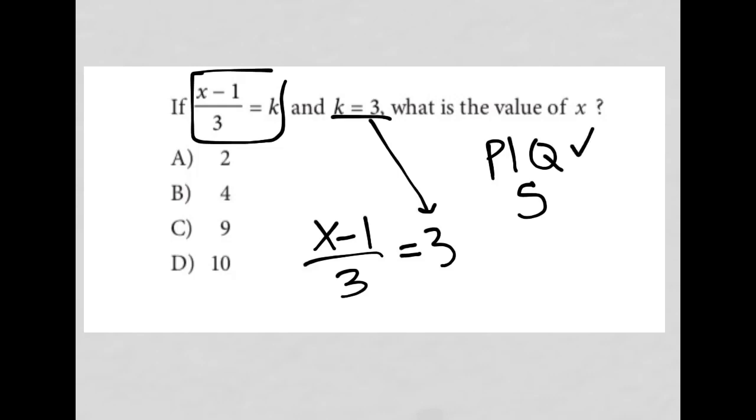Now to simplify this and solve for x, I will multiply both sides of this equation by 3. On my left-hand side, the threes are gone, leaving me with x - 1 = 9.